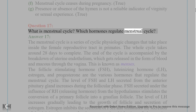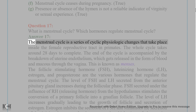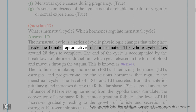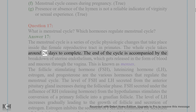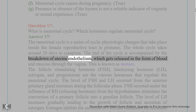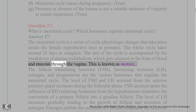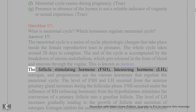Question 17: What is the menstrual cycle? Which hormones regulate the menstrual cycle? Answer 17: The menstrual cycle is a series of cyclic physiological changes that take place inside the female reproductive tract in primates. The whole cycle takes around 28 days to complete. The end of the cycle is accompanied by the breakdown of uterine endothelium, which gets released in the form of blood and mucus through the vagina. This is known as menses.